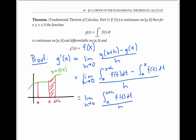Now informally, the integral from x to x plus h can be closely approximated by a skinny rectangle with height f of x and width h. And so this limit is approximately the limit as h goes to zero of f of x times h over h, which is just f of x.